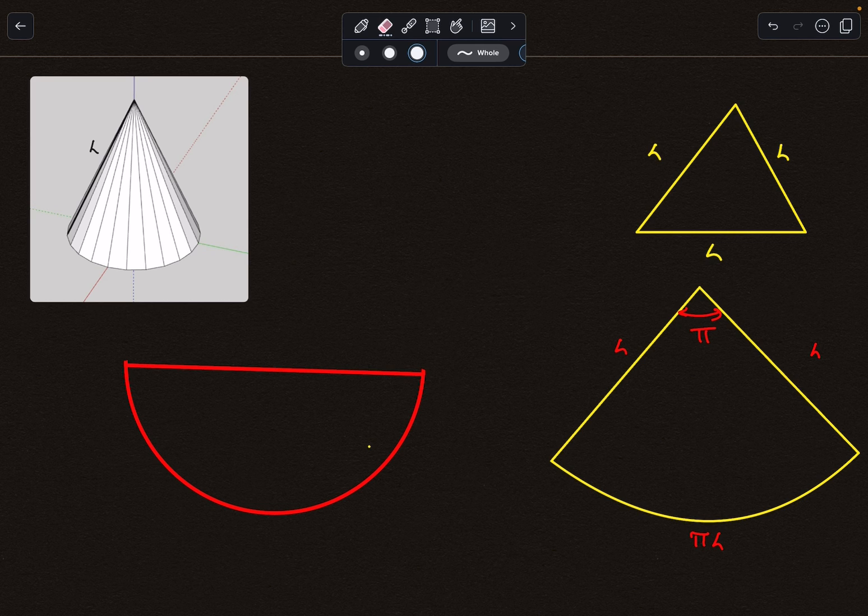Now let's say our ant starts over here at the red point. Let's call this point as point number one, and the ant needs to reach this point over here, which is point number two.